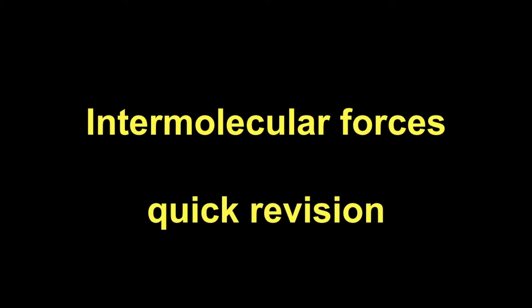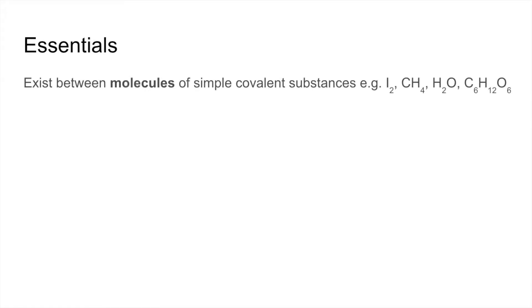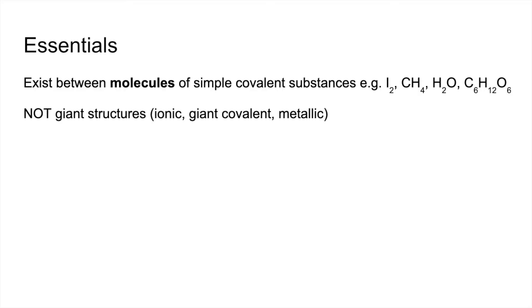Quick revision video on intermolecular forces. Some essentials: these exist between molecules of simple covalent substances. Examples include iodine, methane, water, and glucose. They don't exist between giant structures, so ionic substances, giant covalent, and metallic substances don't have intermolecular forces — only between molecules of simple covalent substances.